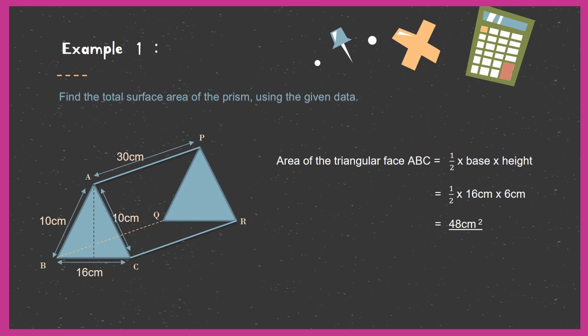Knowing the height of the triangle is 6 cm, we find the area of the triangles. Area equals half times base times height: half times 16 times 6. We can simplify — dividing 2 into 6 gives 3 — so 3 multiplied by 16 equals 48 cm². The area of one triangle is 48 cm², and since we have two identical triangles in the prism, the other triangle is also 48 cm².